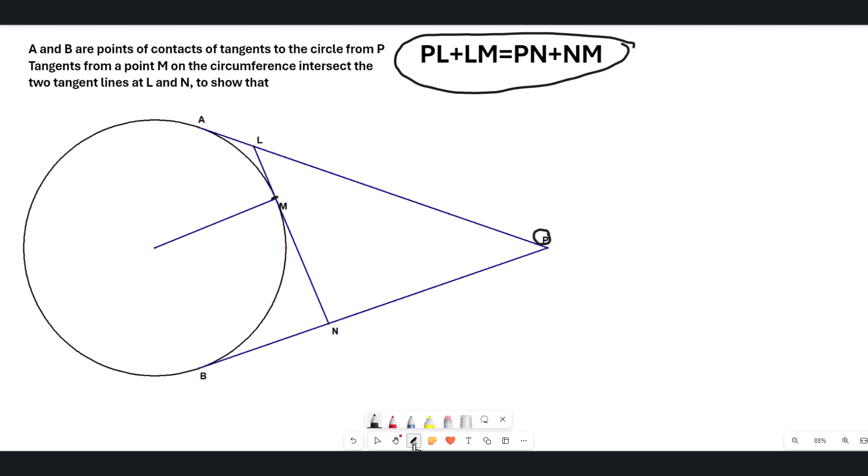So what you told me was that the first thing that you noticed was that this line PA and this line PB, they are congruent, and they will be by an earlier theorem or property that we did. Okay, and then what happens?